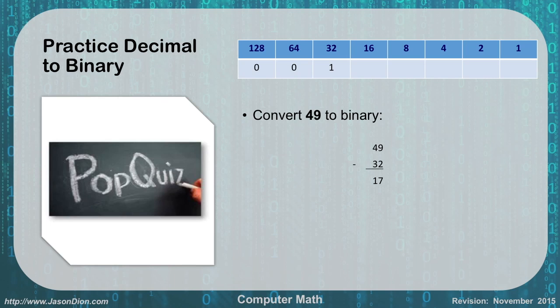Can 16 go into 17? Yes, 1 times, so we'll take the 1 out. At that point, we have 1 left. 8 can't go into 1, so it's 0. 4 can't go into 1, so it's 0. 2 can't go into 1, so it's 0. 1 goes into 1, so we get 1. So our answer becomes 00110001.